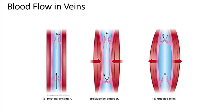Veins have valves that prevent backflow of blood, keeping blood flowing in one direction. Blood flow in veins is also enhanced by muscle contraction and relaxation. When muscles contract, the upper valve opens and the lower valve closes, preventing backflow.